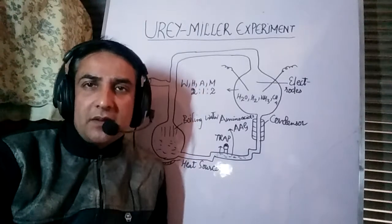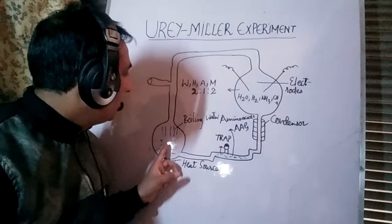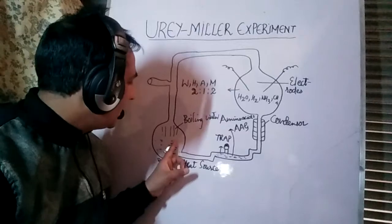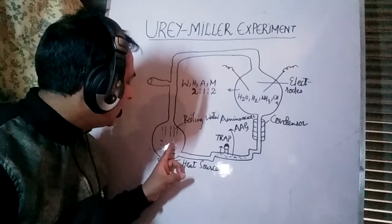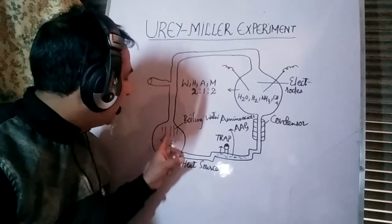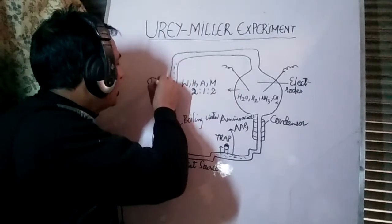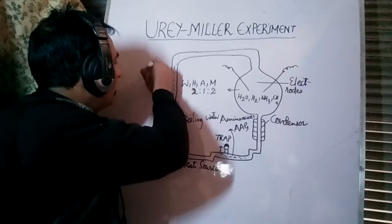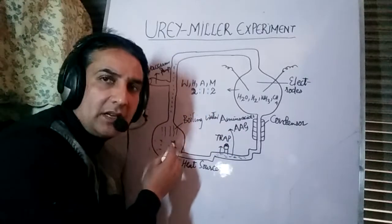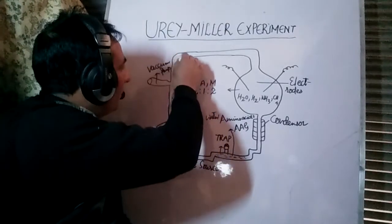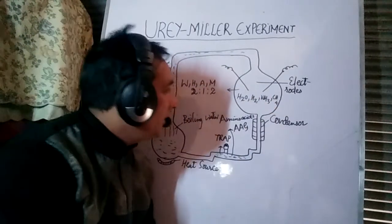We shall now discuss the apparatus and procedure used by Stanley Miller and Urey. There is boiling water in this flask, with a heat source supplied to it. The temperature was very high and this boiling water changed into vapor form. These vapors moved upward, and there is also a vacuum pump connected to the apparatus. The vapors go to a round-bottom flask in the apparatus.